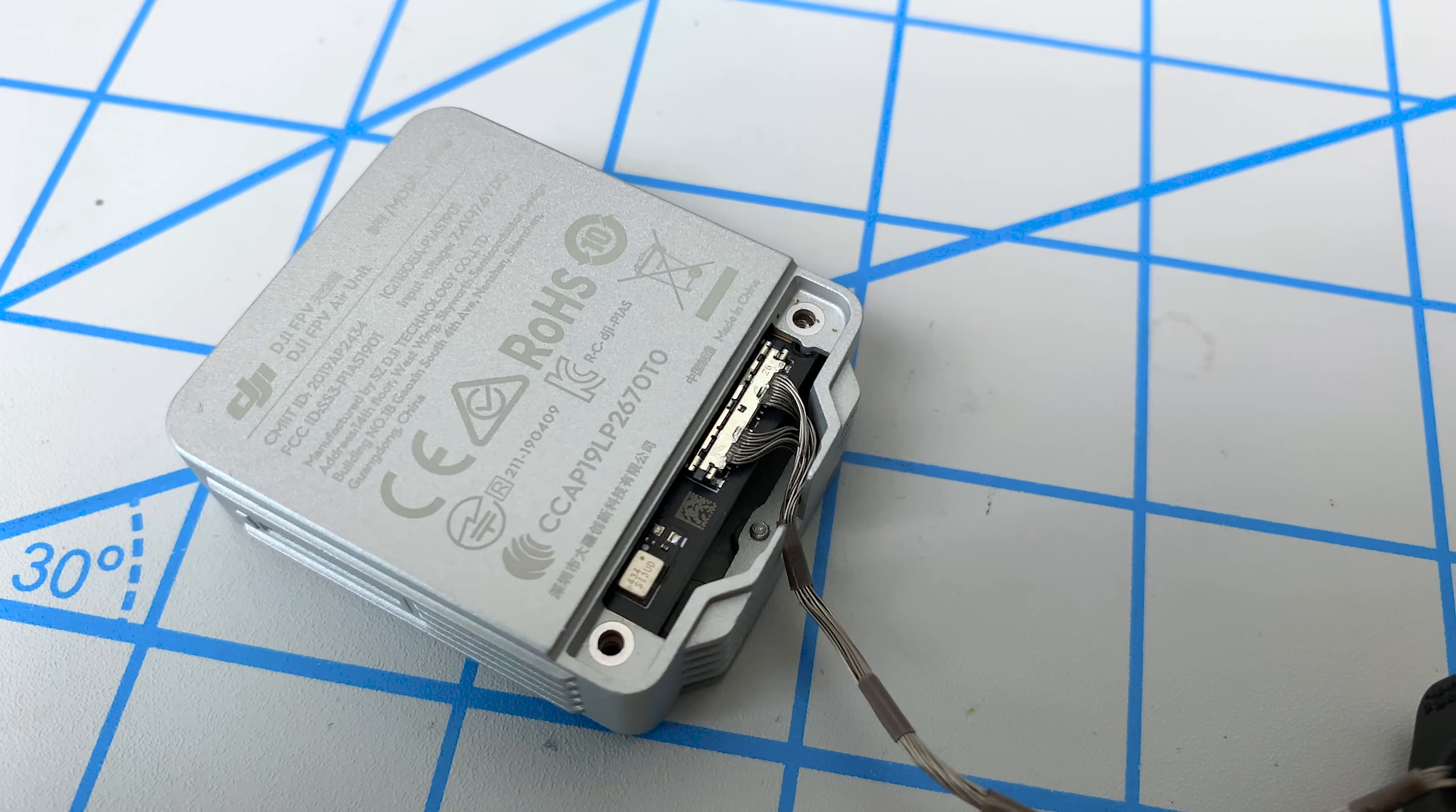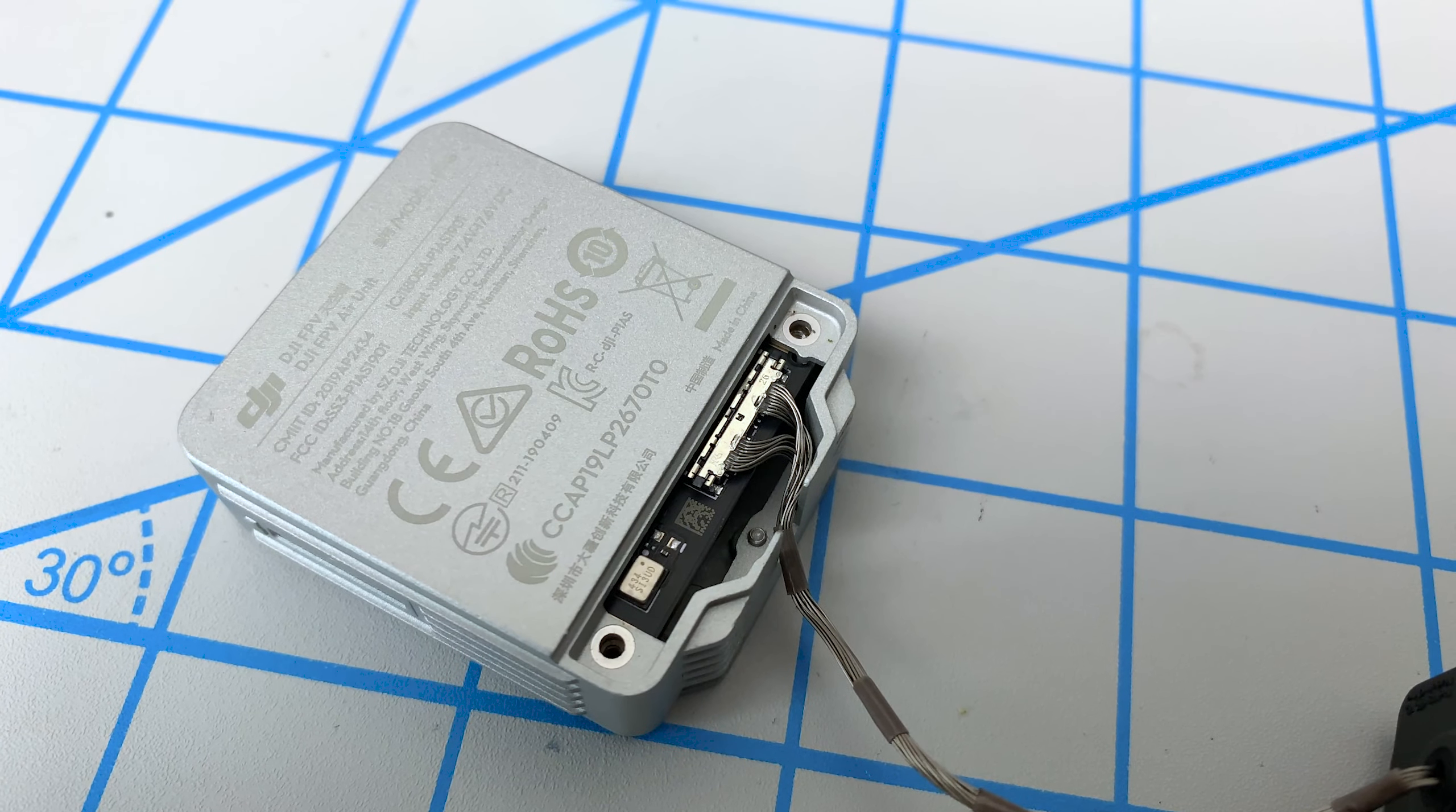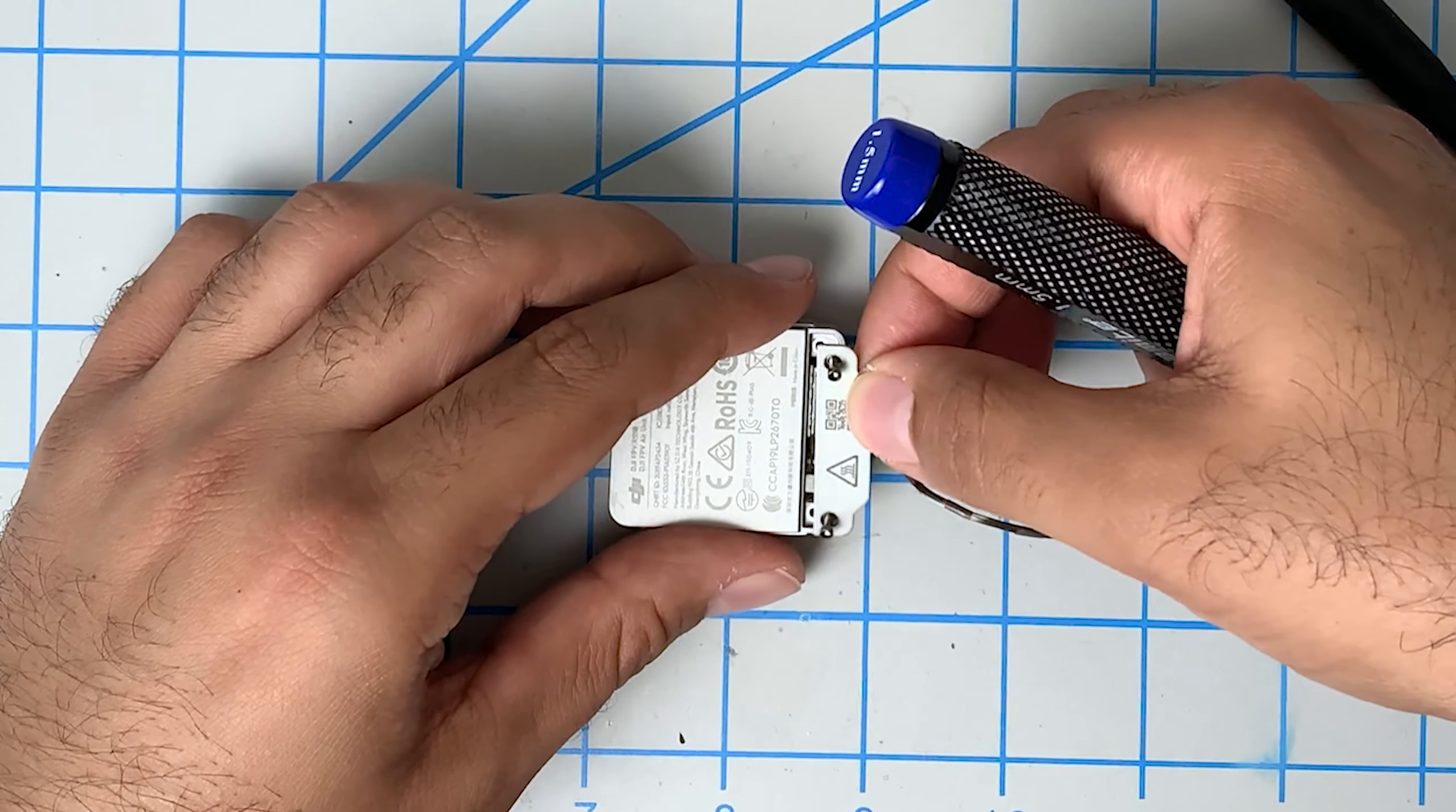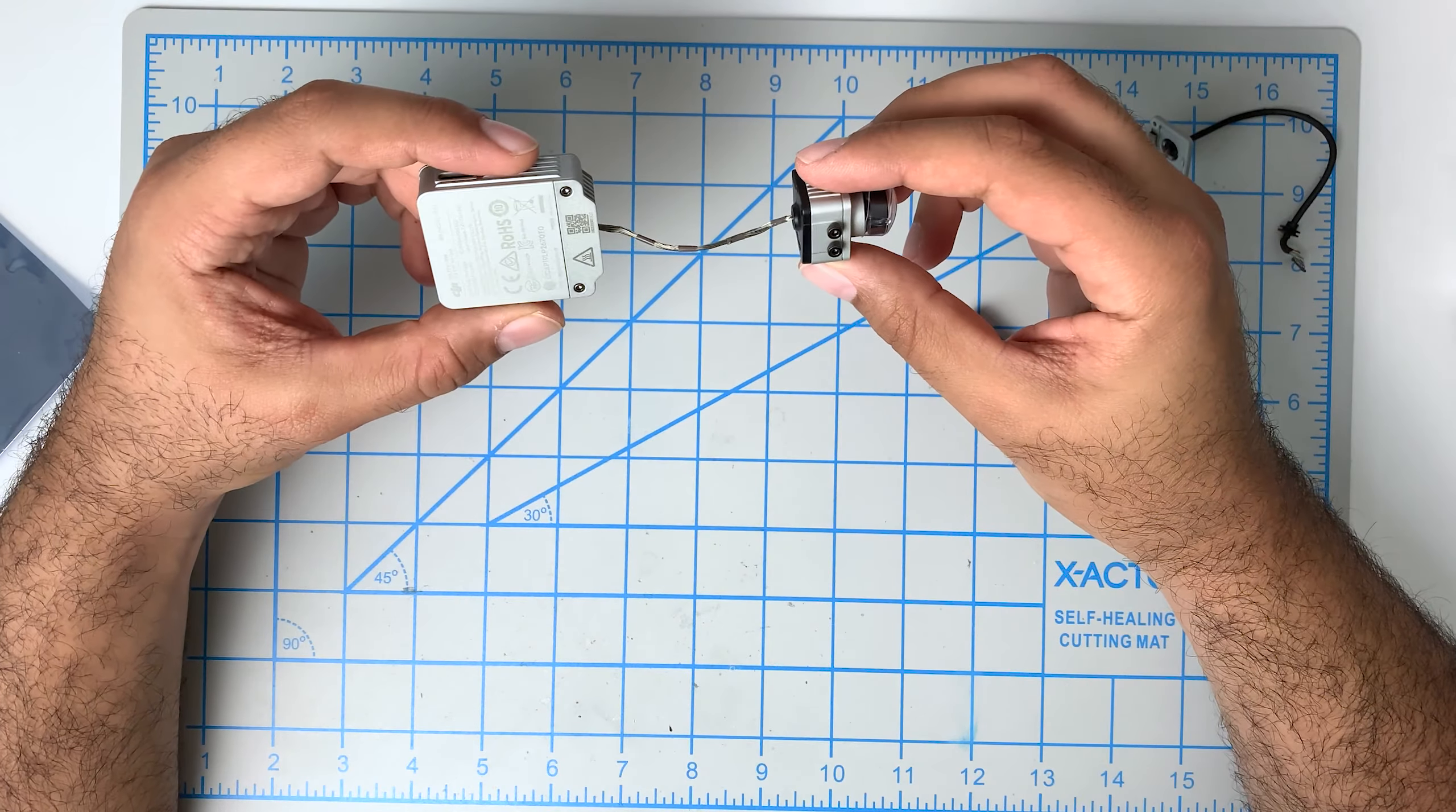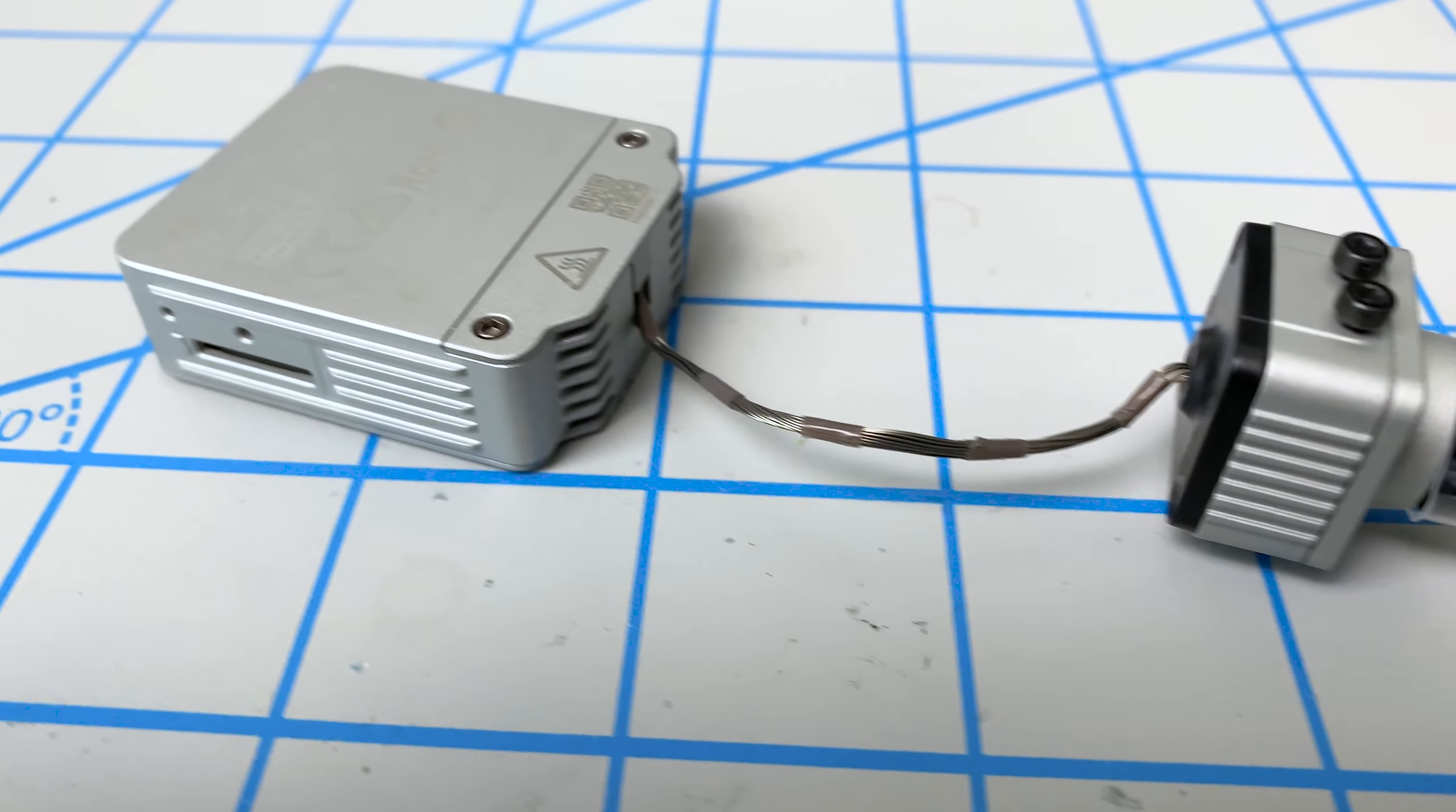And just tuck this wire inside here. Very gently tuck it inside. Okay, and now we can reinstall this top cover. There you have it. Your shortened DJI air unit camera cable.